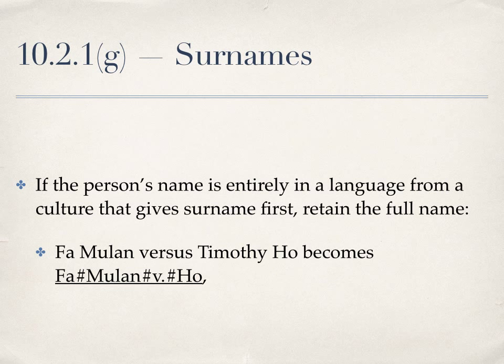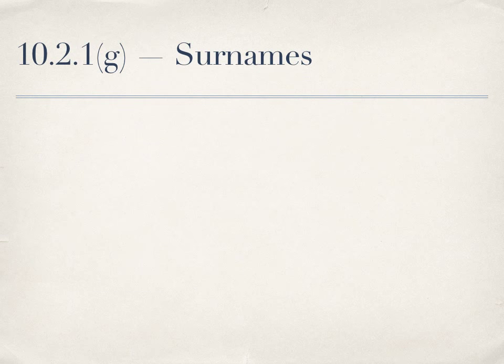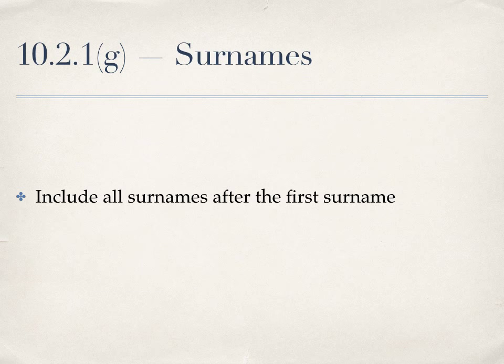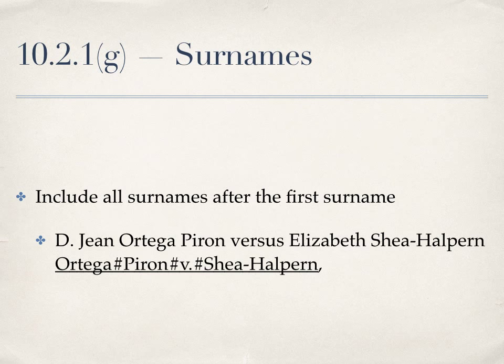Note: I did not retain the Timothy because Timothy is not in the same language as Ho. Finally, include all surnames after the first surname listed for the first party, even when the names are not hyphenated. So in the case of D. Jean Ortega Perron v. Elizabeth Shea Halpern, you would write Ortega Perron v. Shea Halpern.